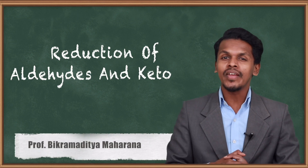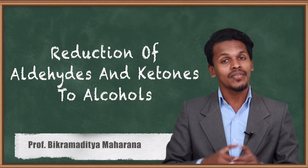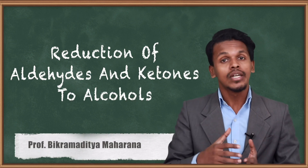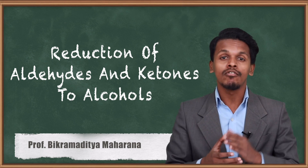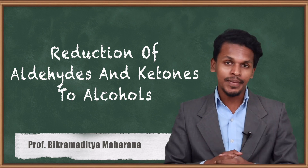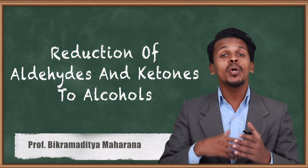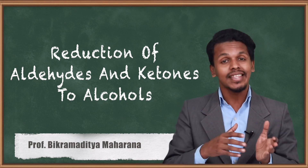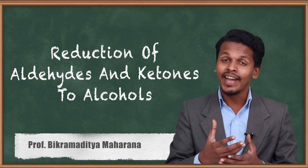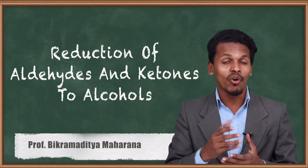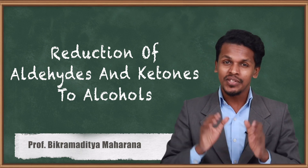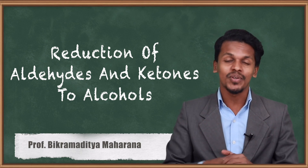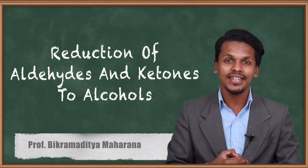Hey friend, in the previous lecture we understood that we can convert an aldehyde or ketone to alcohol by using the Grignard reagent. But there is also an alternative method where we could prepare the alcohol by reduction of aldehyde or by reduction of ketone. So this is what we are going to talk about in this topic.